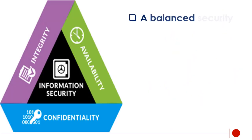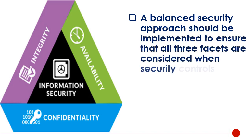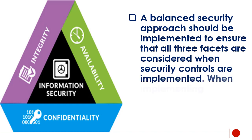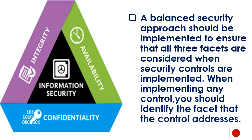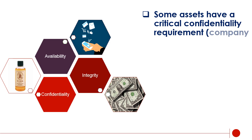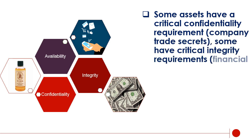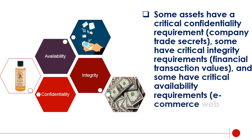A balanced security approach should be implemented to ensure that all three facets are considered when security controls are implemented. When implementing any control, you should identify the facet that the control addresses. Some assets have a critical confidentiality requirement — such as company trade secrets — some have critical integrity requirements — such as financial transaction values — and some have critical availability requirements, such as e-commerce web servers.